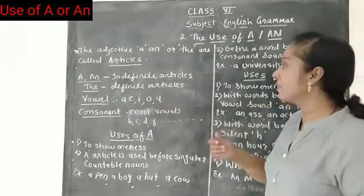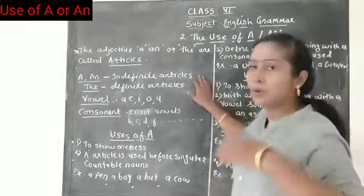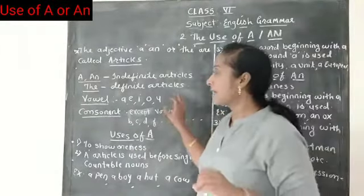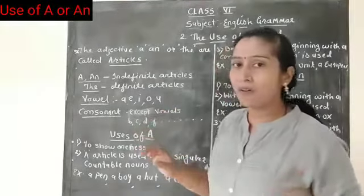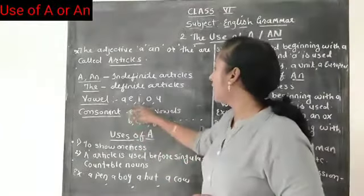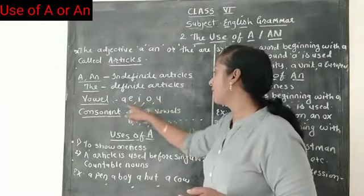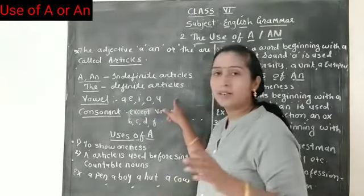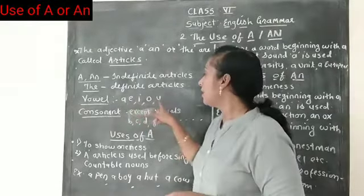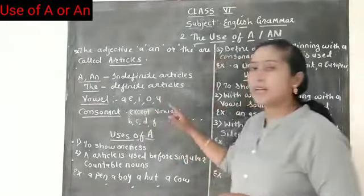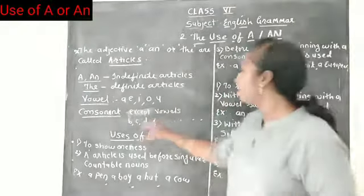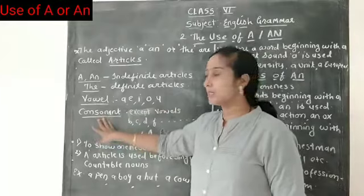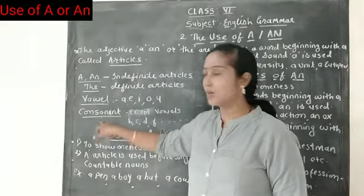We will first see how we use A and AN in a sentence. First of all, I will tell you about vowels. The vowels are: A, E, I, O, U — five alphabets. And except vowels, B, C, D and so on are called consonants.